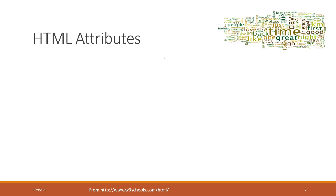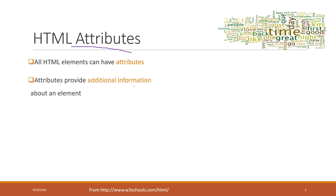Let's talk more about the HTML code, specifically about attributes. Almost all HTML elements have attributes. Attributes provide additional information about the element — for example, the style, the way elements look, and other information like ID.